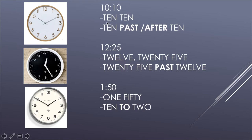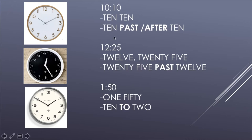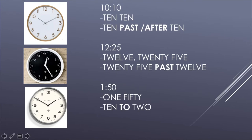Miren, de qué forma podemos decir esta hora: podemos leerla tal cual mencionando los números en inglés — 10:10. O podemos utilizar esta segunda forma que se nos hace un poquito más complicada porque no estamos acostumbrados, pero se pueden acostumbrar fácilmente. Se diría "ten past" or "ten after ten" — que equivale a decir 10 minutos pasado las 10. Pueden utilizar la palabra "past" o la palabra "after" siempre que tengamos una hora marcada hasta la media hora.